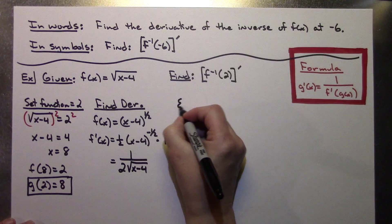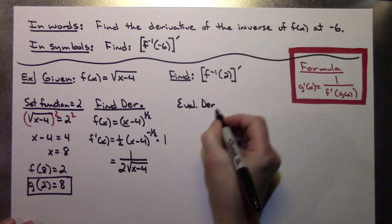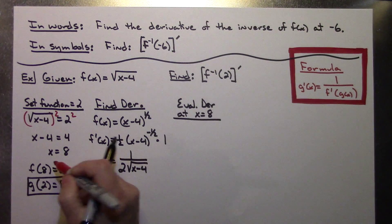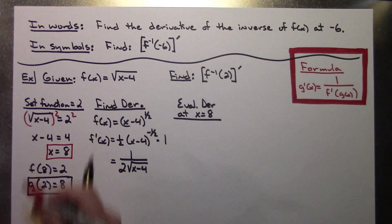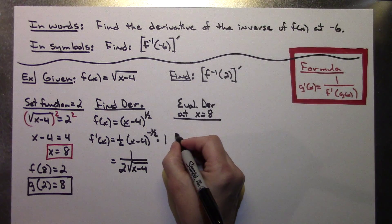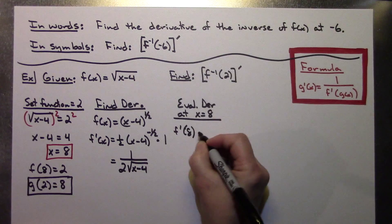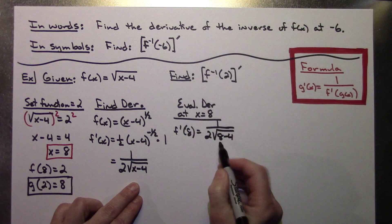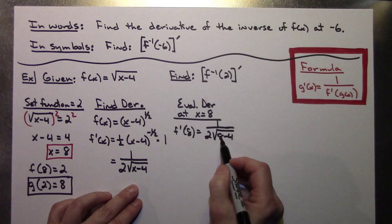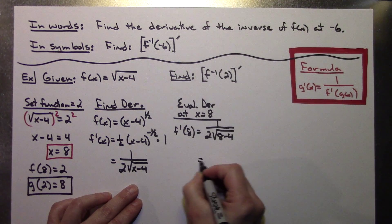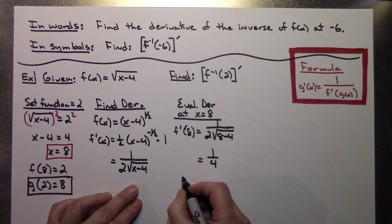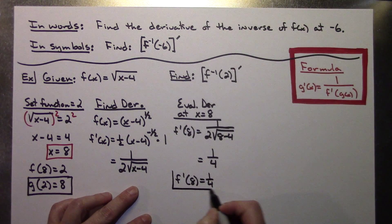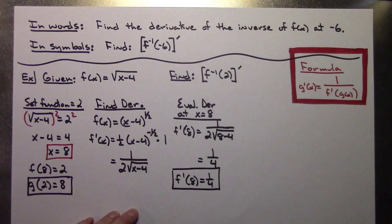Now I'm going to evaluate my derivative at x equals 8 — which came from the first step. So f prime of 8 equals 1 over 2 times the square root of 8 minus 4. That's 1 over 2 times the square root of 4. Square root of 4 is 2, so 2 times 2 on the bottom gives me 1/4. So f prime of 8 equals 1/4, and that's another value I need when I plug into my formula.